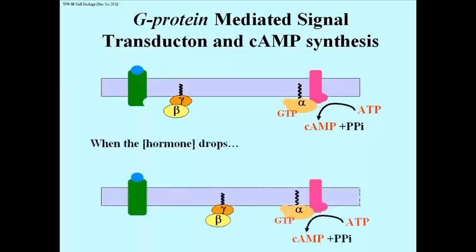The cell, in other words, will keep making cyclic AMP to sustain the cell response, until levels of the signal molecules drop in the blood, as illustrated here in the animation.